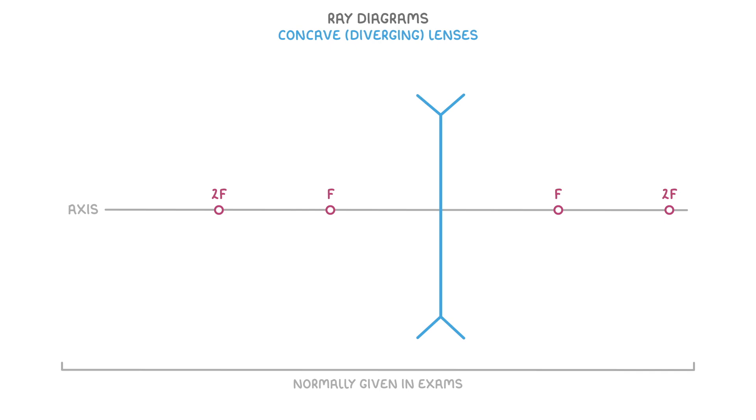So, let's imagine that this chicken is our object, and that we need to draw a ray diagram to show where the image will form. The first thing we do is pick a point near the top of our object, and draw our incident rays coming out of the object at that point.